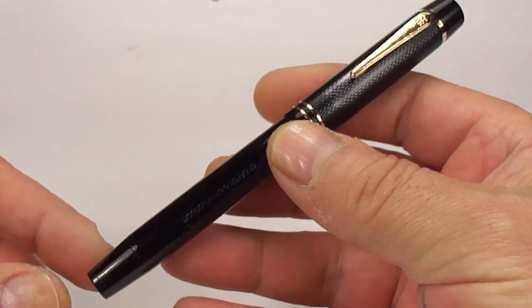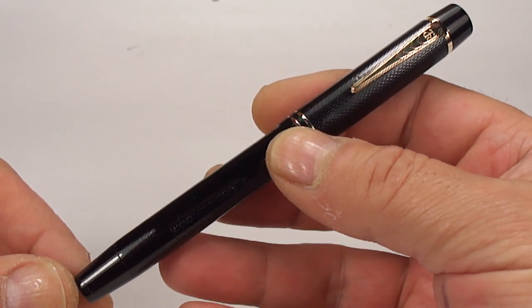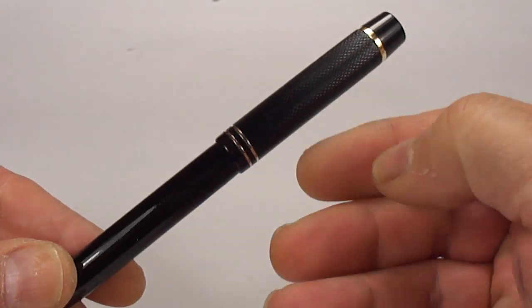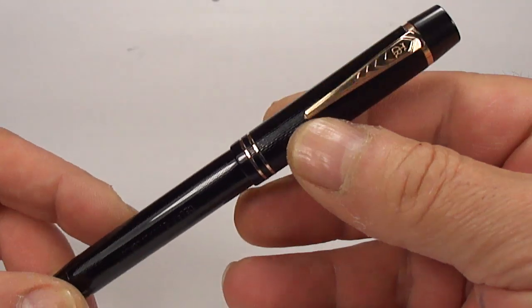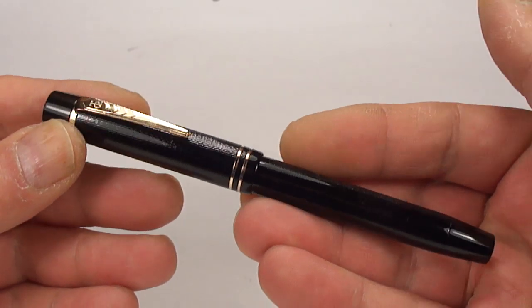This particular one is the model number 6233 and then 7.7, which I assume is the color and the trim, or maybe even part of the model number if you like.